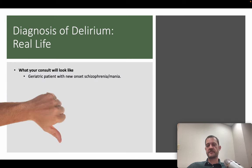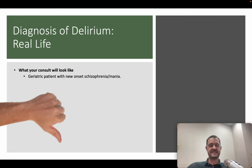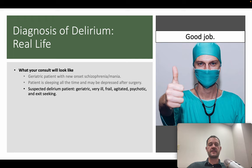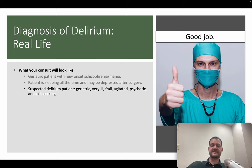What does a real-life delirium consult look like? A geriatric patient with new-onset schizophrenia or mania is never actually that — a 75-year-old doesn't just get diagnosed with schizophrenia. A patient sleeping all the time post-surgery might get sent as 'possibly depressed,' but that's not the right framing. A good consult is a geriatric, very ill, frail, agitated, psychotic, exit-seeking patient — the team already understands it's delirium.